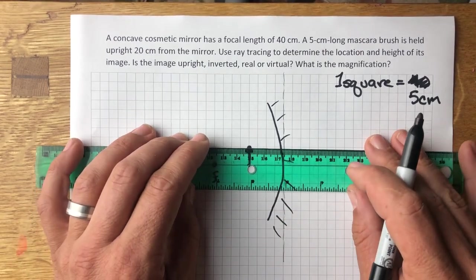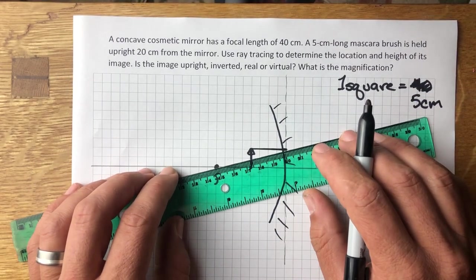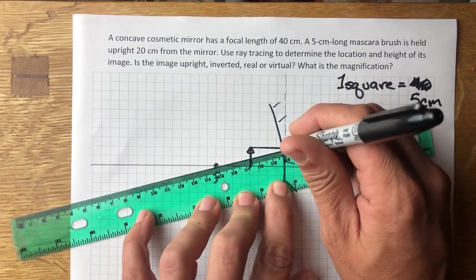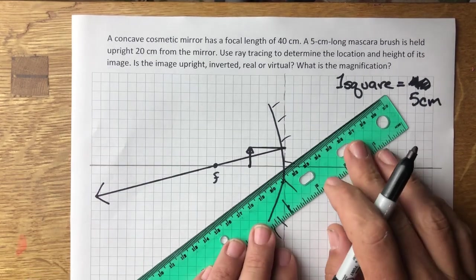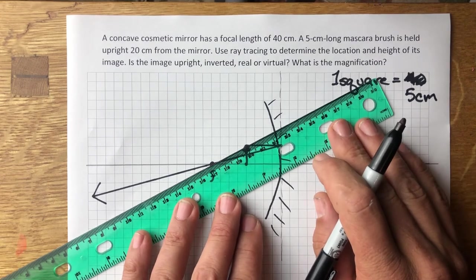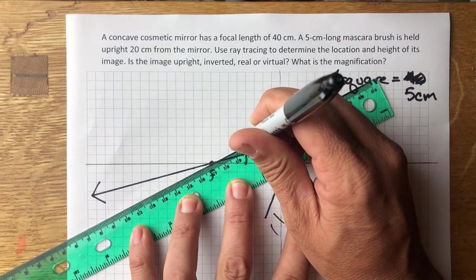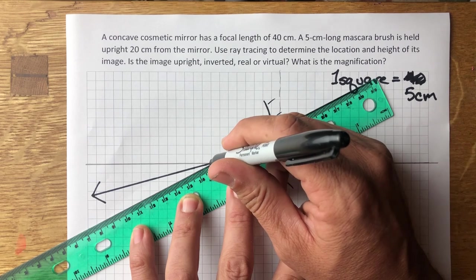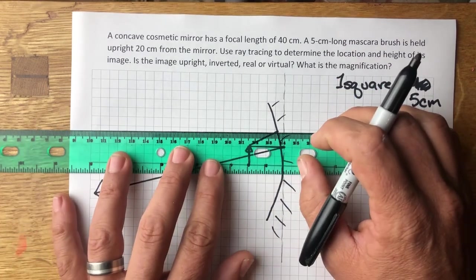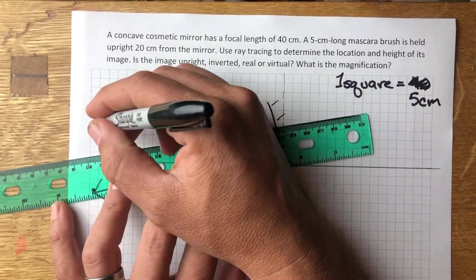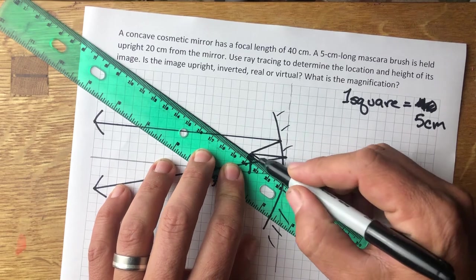So, one ray — the first ray — heads in parallel to the optical axis, bounces off the mirror, and goes back through the focal point. One ray emerges parallel; for that to happen it has to appear to have come from the focal point, so I line it up with the focal point and it bounces off parallel to the optical axis. One ray hits the middle and bounces off with angle of incidence equal to angle of reflection.